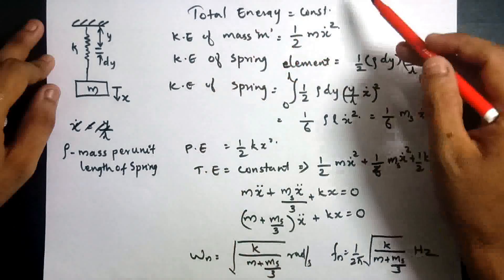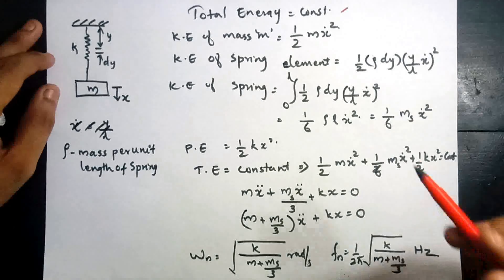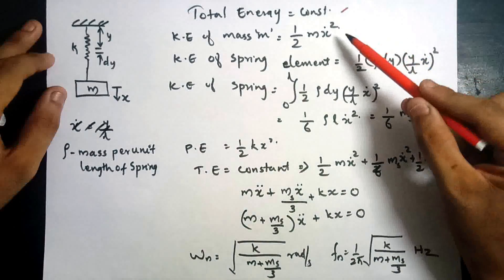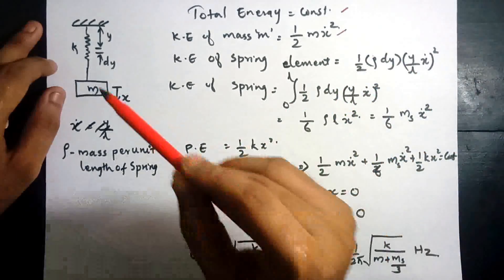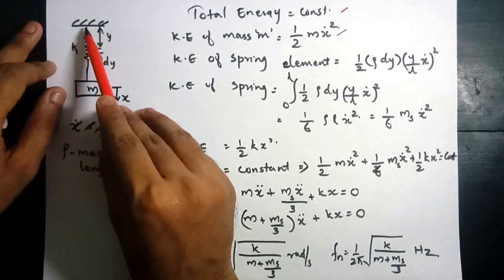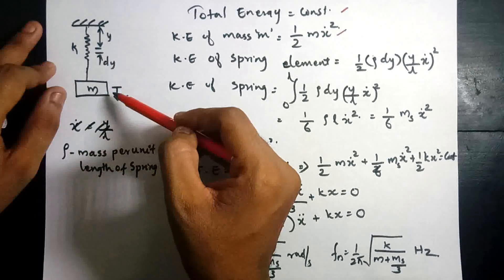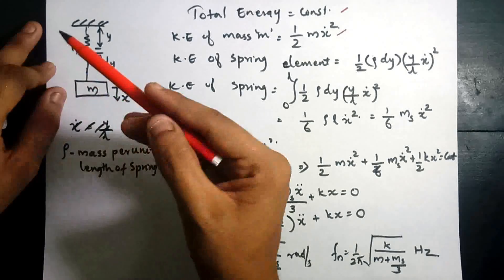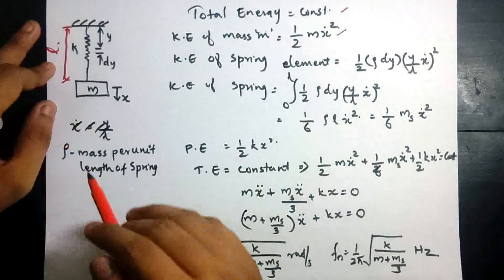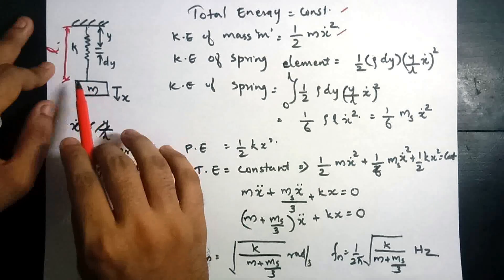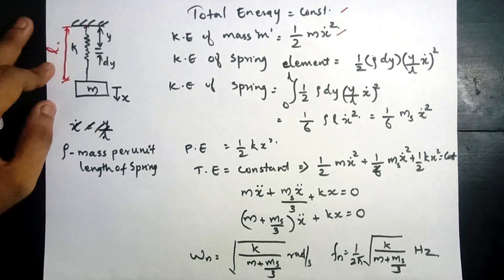The kinetic energy equation is equal to half m x-dot squared. That is the equation. Now we consider the spring. The spring has a total length L. The end point has deflection x, and at the support point the deflection is zero. The corresponding velocity at the end point is x-dot.